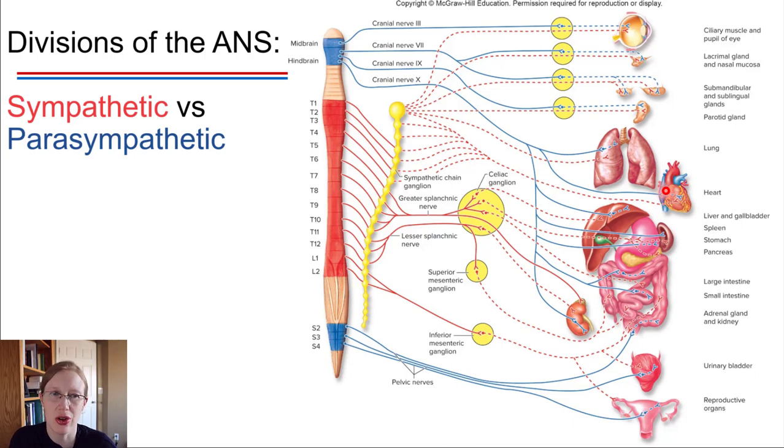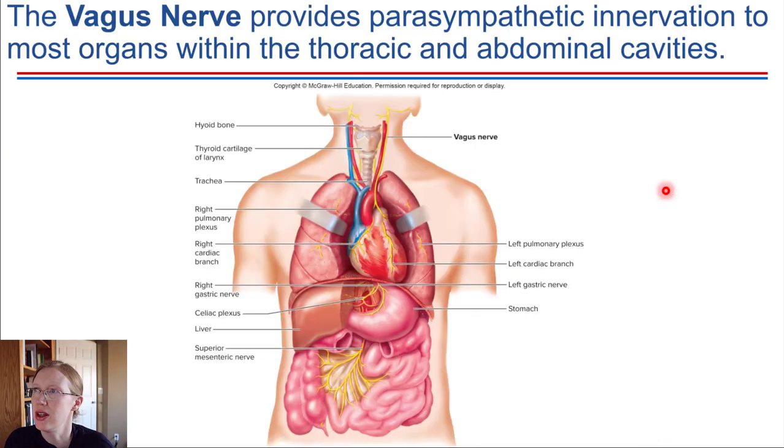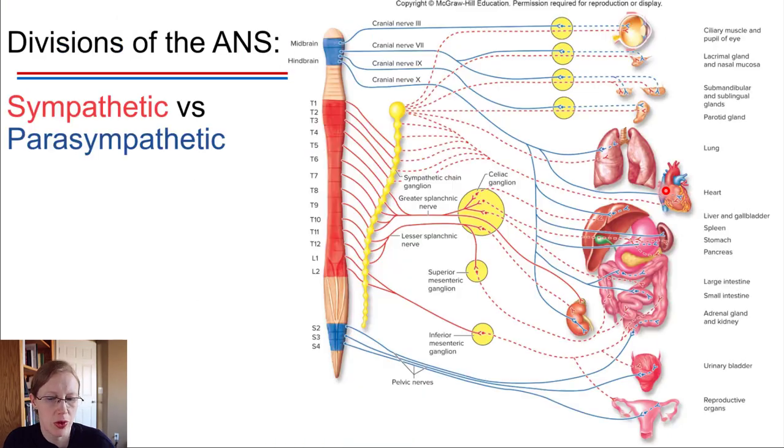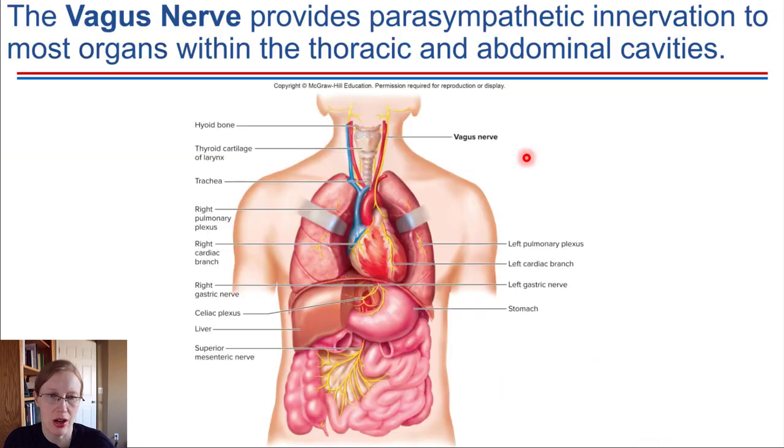And I have one more picture just to show you of that vagus nerve, which again is coming from cranial nerve number 10 up here. All of these branches off to the different organs. The vagus nerve is the nerve that is branching off to all of those different visceral organs. You can see in yellow is the vagus nerve, all these different organs that it innervates and allows control of.